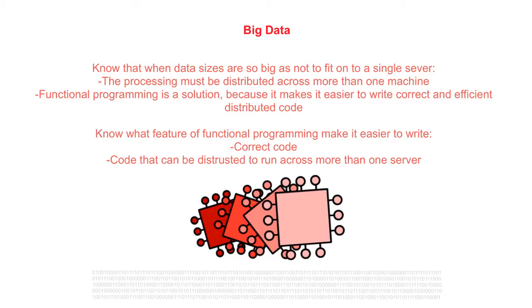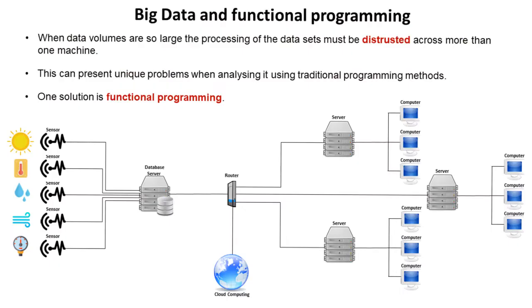In this video we're going to go over the fact that big data is spread across multiple servers, some of the problems this causes, and how functional programming can be a solution. When data volumes are so large, the processing of this data has to be distributed across more than one machine, which can present unique problems when analyzing it using traditional programming methods.